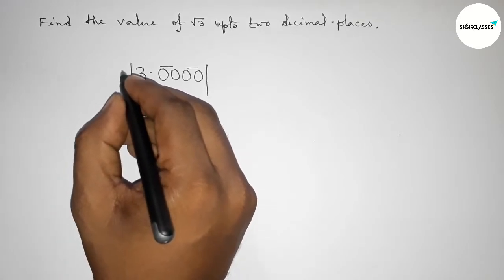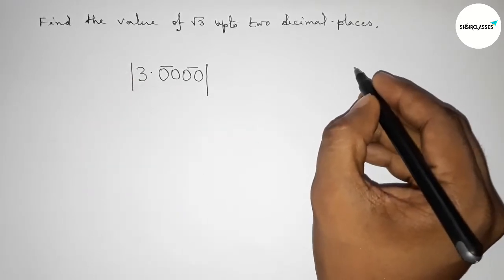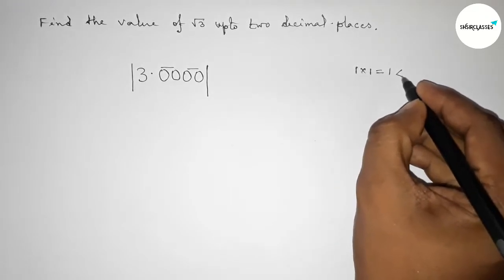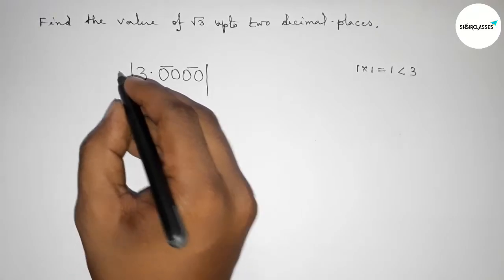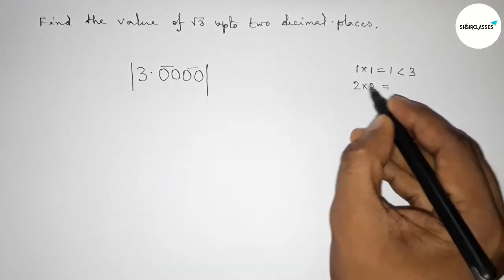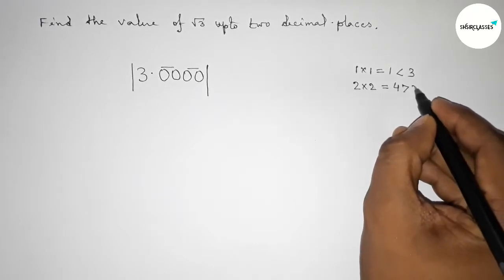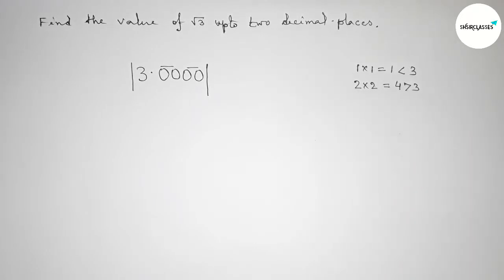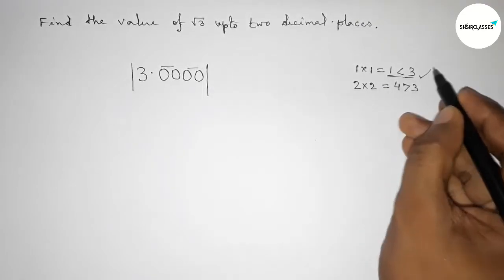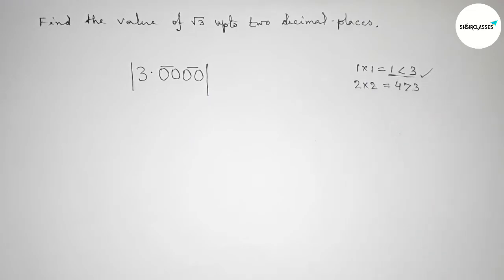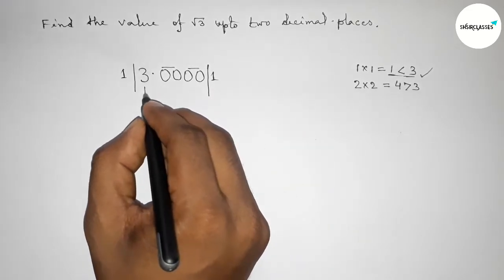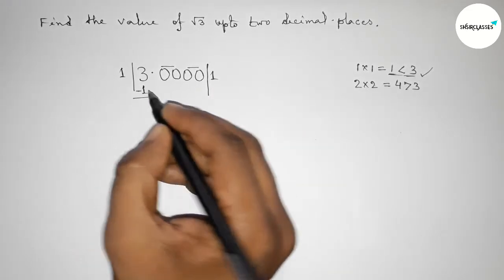Now take a number and multiply it by itself such that the result is less than 3. If you take 1 and multiply by 1, that is 1, which is less than 3. If you take 2 and multiply by 2, that is 4, which is greater than 3. So we should take 1, since 1 is almost near to 3 and less than 3.